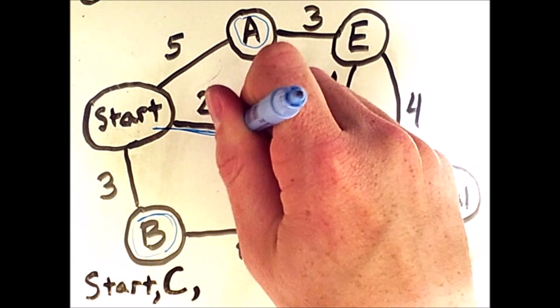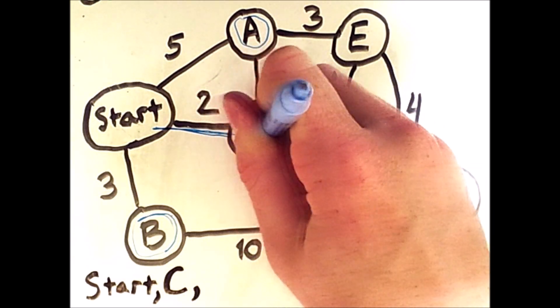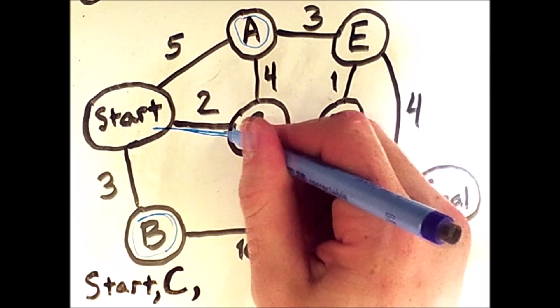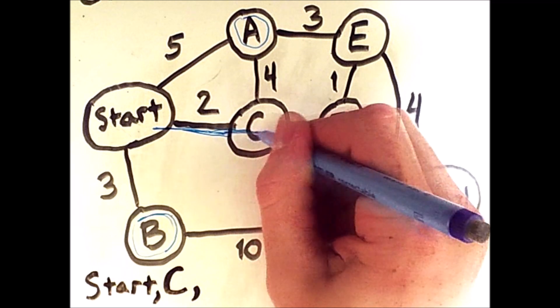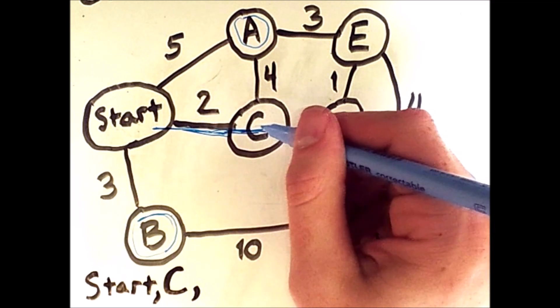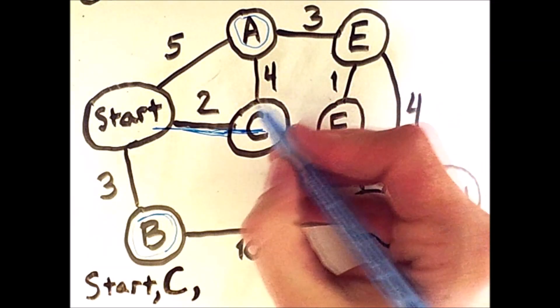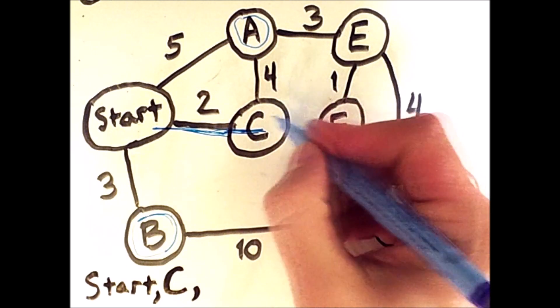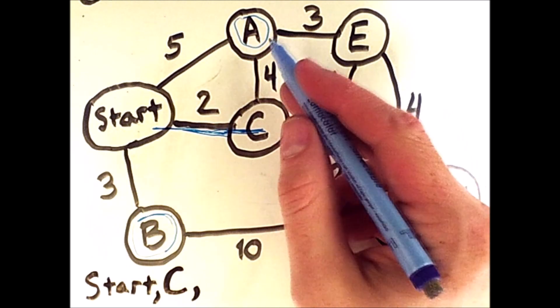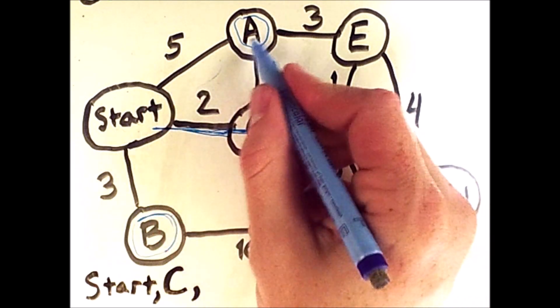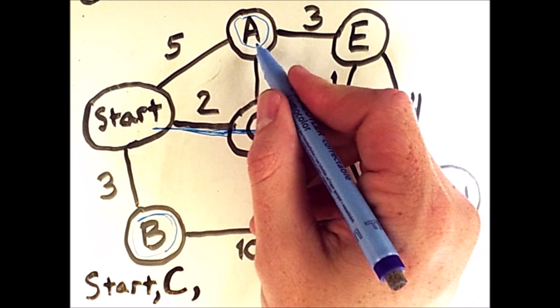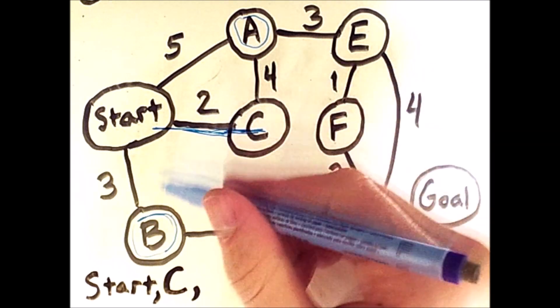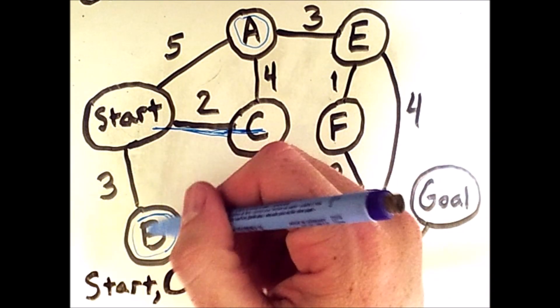Now at this point, C is no longer on the fringe, but if we look at the path to C, from here, the only other state we can visit is A at a cost of 1, 2, 3, 4, 5, 6. That total cost of 6 is more than the cost of 5 that we can use to get to A from the start. It's also more than the cost of 3 to reach B.